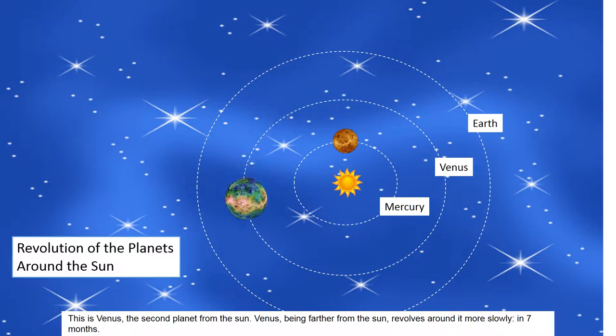This is Venus, the second planet from the Sun. Venus, being farther from the Sun, revolves around it more slowly in seven months.